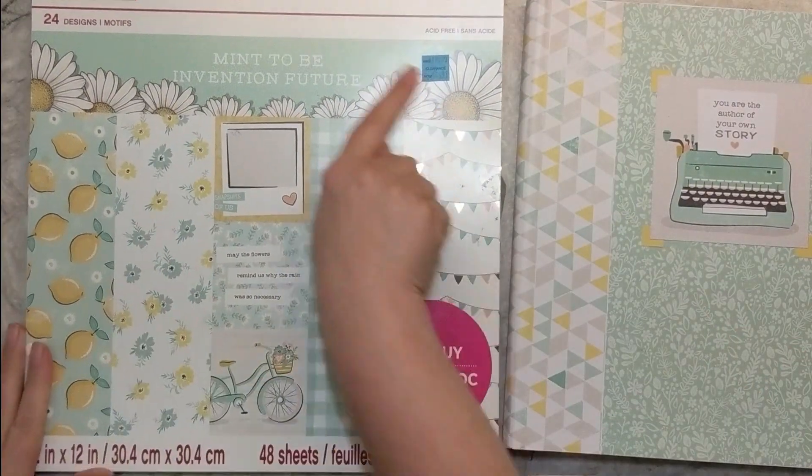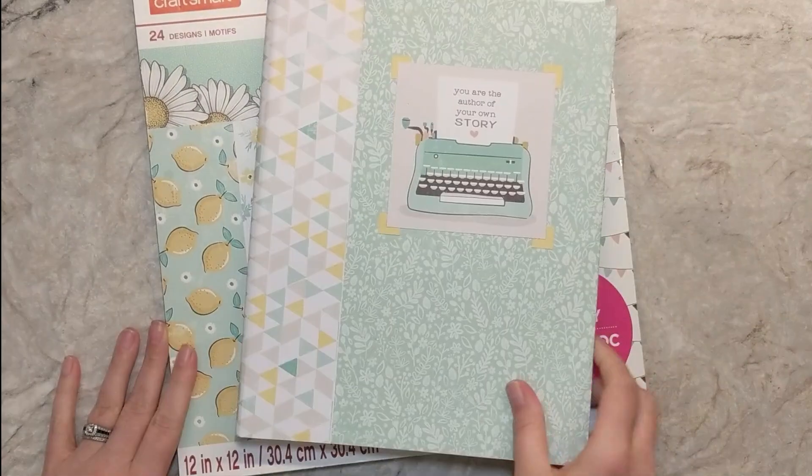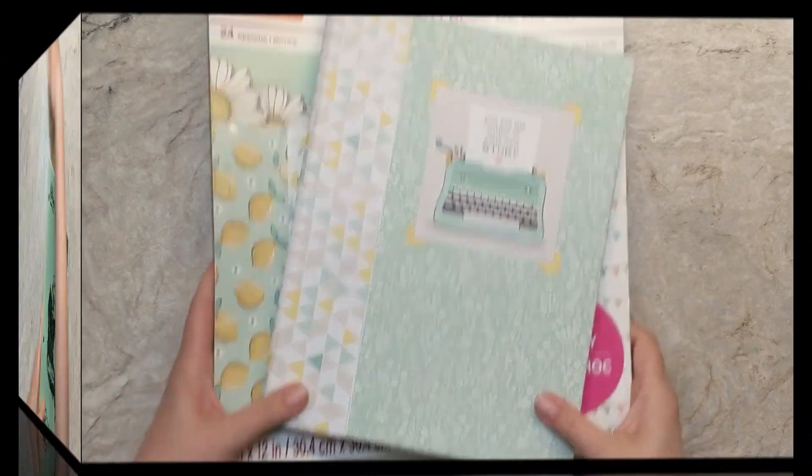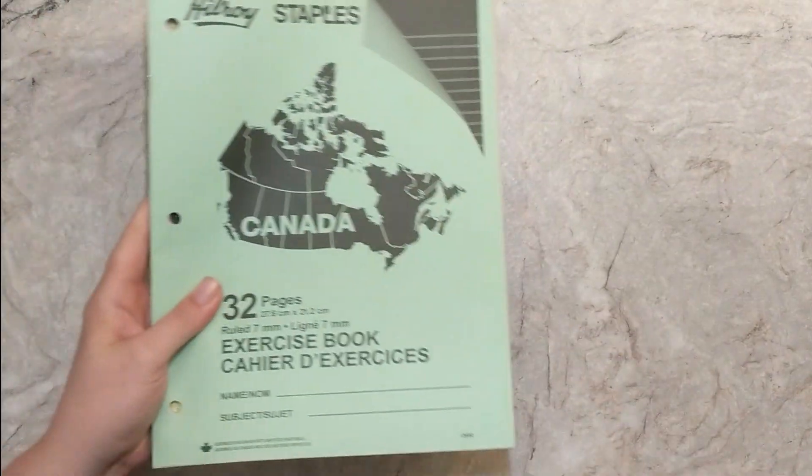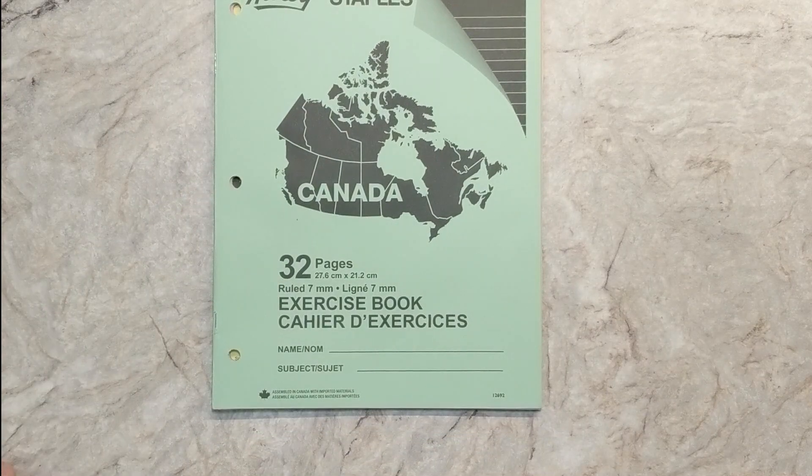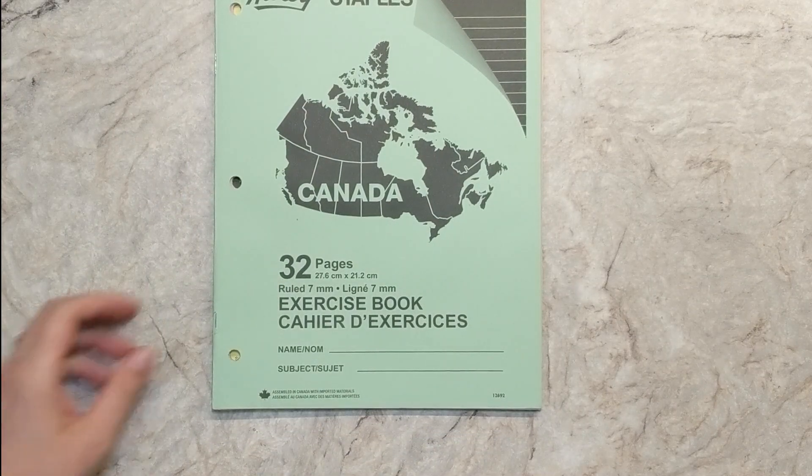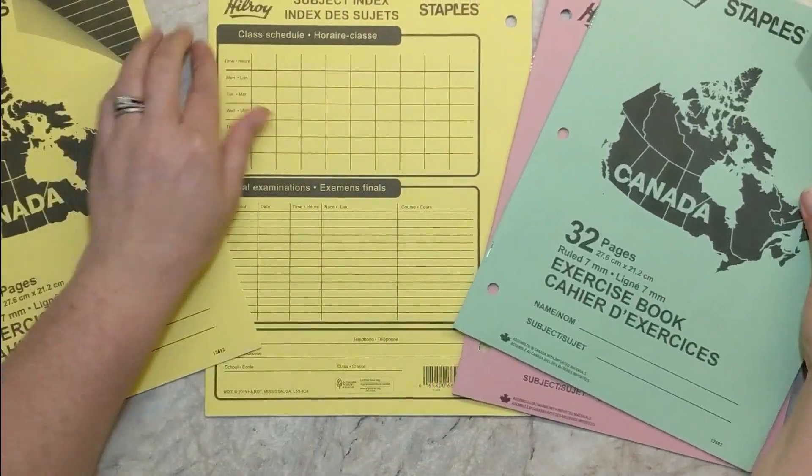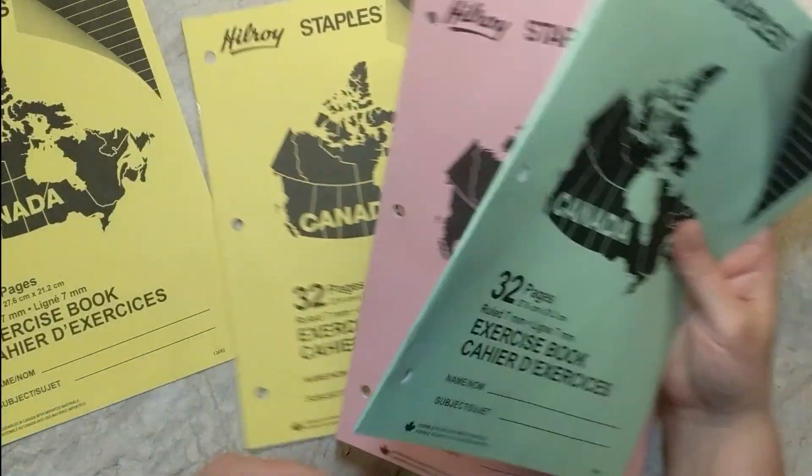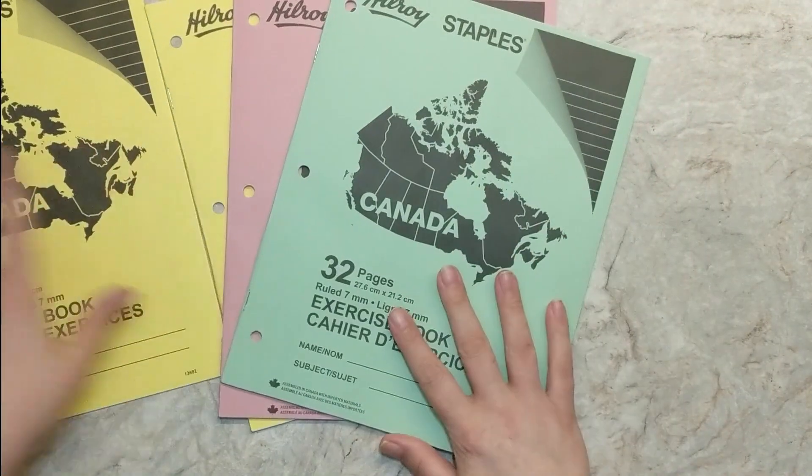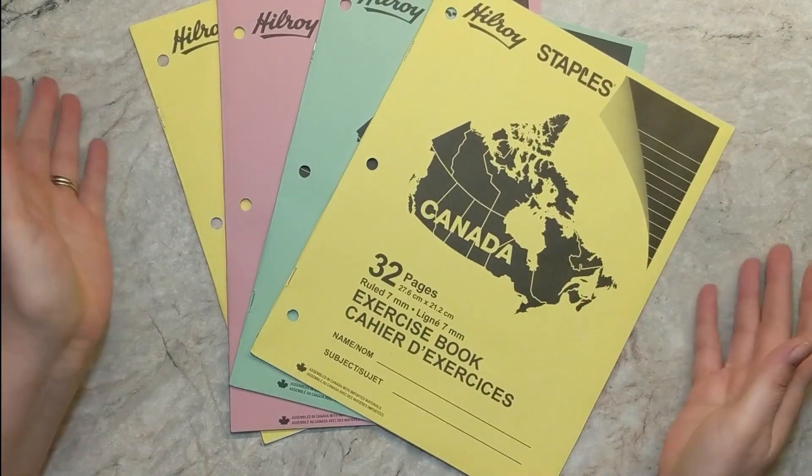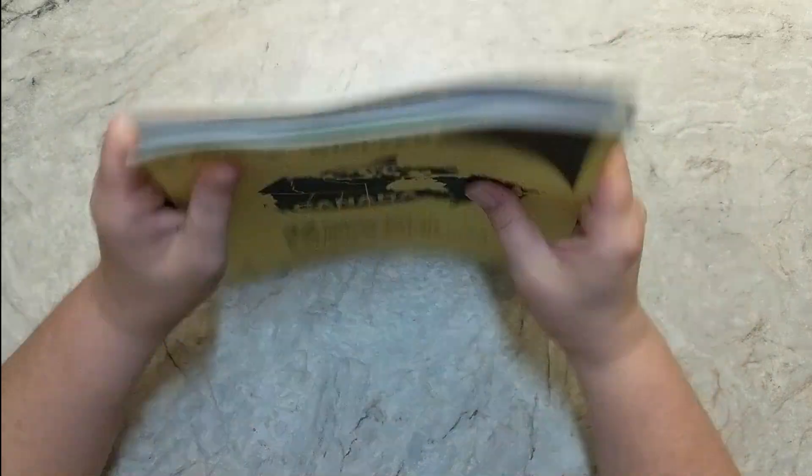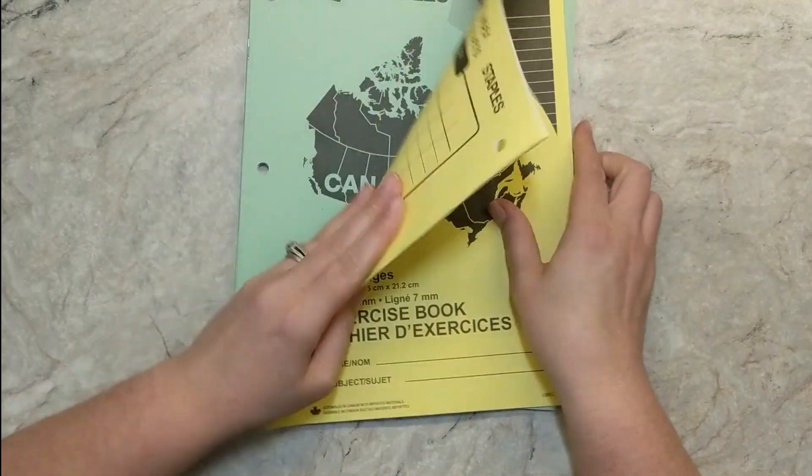Okay, so for this journal I have this Meant to Be paper pack from Michael's that I picked up. So here are the little packages of notebooks. These are from Hilroy and they're 32 pages of lined paper. They're just little skinny cheap notebooks. You can pick these up anywhere, the dollar store probably.